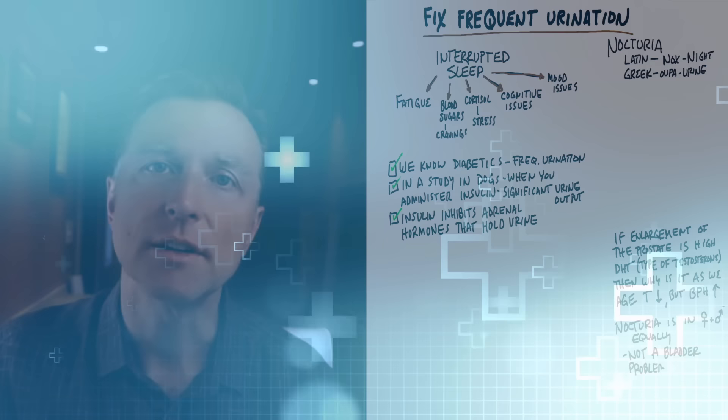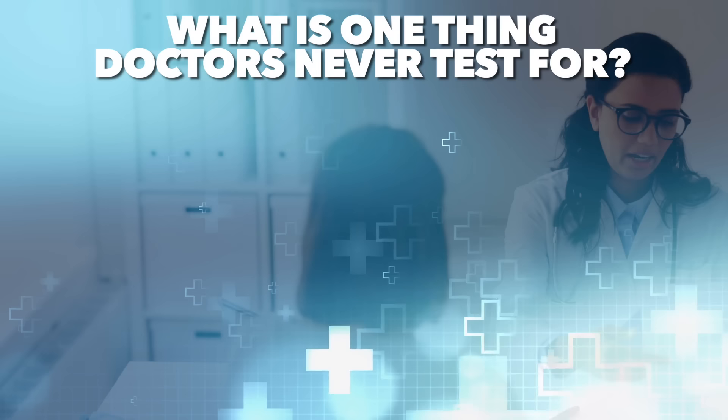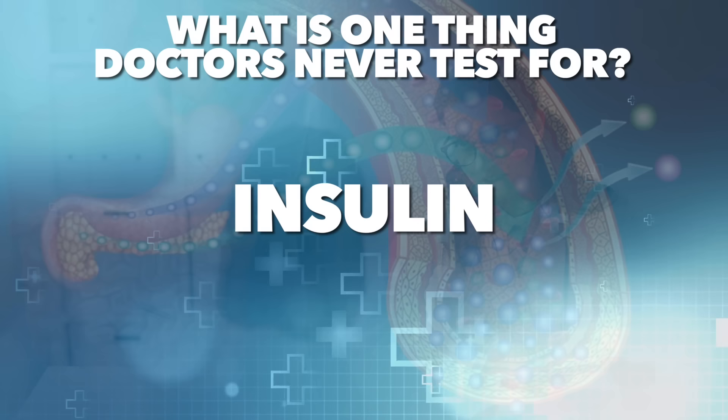And the last clue is this. High levels of insulin are nearly always found in overactive bladder syndrome. Now, what is one thing that doctors never, ever test? Insulin. They check your blood sugars, but they never do a fasting insulin test.